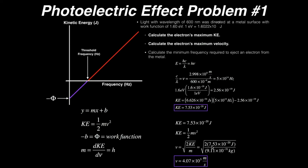So we do 2 times the kinetic energy — 7.53 times 10 to the minus 20th joules — and divide by the mass of the electron, 9.11 times 10 to the minus 31st kilograms. Taking that square root gives the velocity of the electron: 4.07 times 10 to the fifth meters per second. The reason the kinetic energy is so small is because the mass is minuscule.